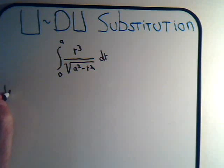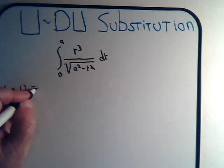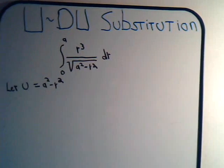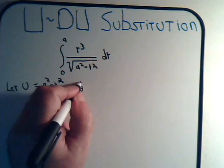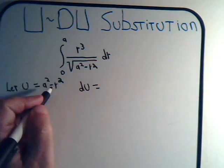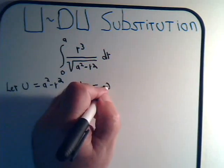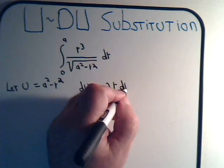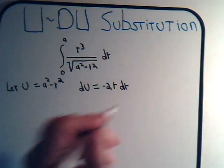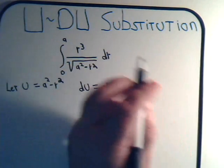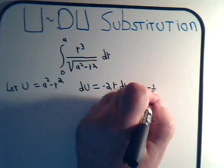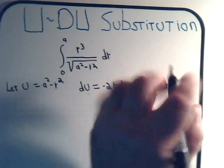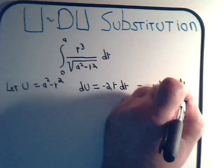We say let U be equal to a² minus r². So dU will be equal to minus 2 times r to the first power, or that's just r, dr. We're going to multiply both sides by minus one half. And I have minus one half dU equals r to the first power dr.